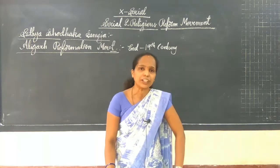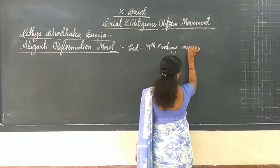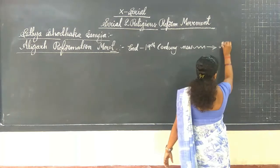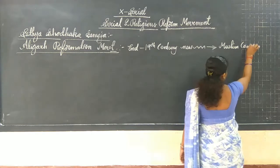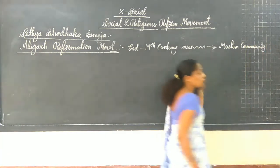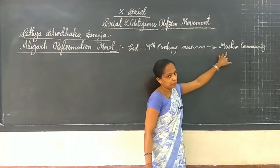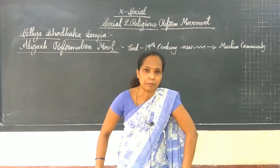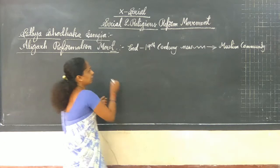As we are going to the end of the 19th century, there is a new wave of social and religious reformation. It was set up in the mind of Muslims - a new wave of social and religious reformation was set up in the Muslim community. And even more, it was brought after the incident of the 1857 movement.